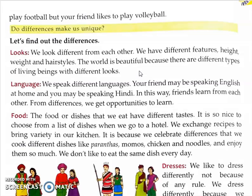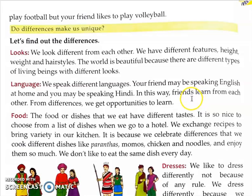अलग-अलग तरह के लोग रहते हैं जो सब के looks, यानि कि दिखने में, सब लोग अलग-अलग दिखते हैं। The second thing is language — we speak different languages. Your friend may be speaking English at home and you may be speaking Hindi. In this way, friends learn from each other. From differences, we get opportunities to learn. हम सब लोग अलग-अलग भाषा बोलते हैं, और differences की वजह से हमें हर बार नई-नई चीज़ें जानने की opportunity मिलती है।